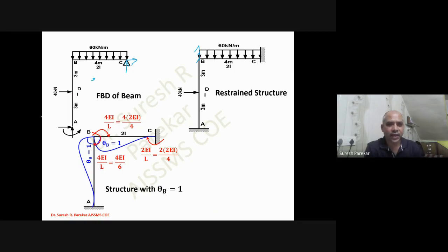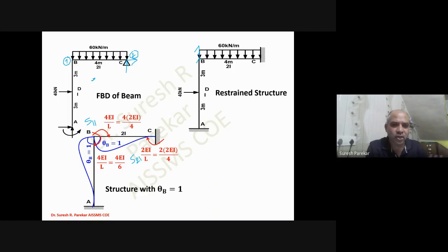We number the displacements: θB = number 1, θC = number 2. The stiffness element S11 is the force at displacement 1 due to unit displacement applied at 1; S21 is the force at displacement 2 due to unit displacement at 1.